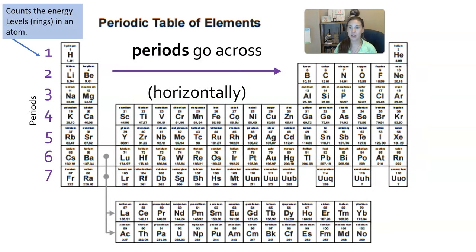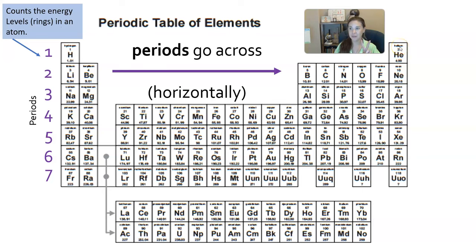Periods go horizontally, and there are seven periods total. Elements in the top period have one ring — that first ring holds only two electrons. So hydrogen and helium have one or two electrons. After helium, lithium needs a second ring because it has three electrons, placing it in row two.